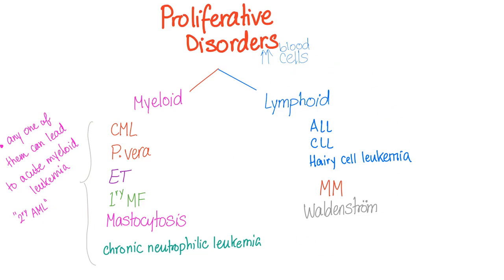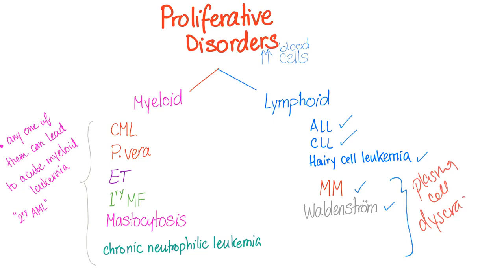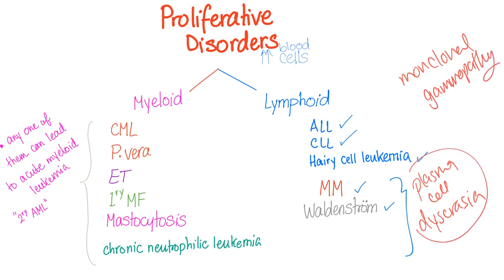The lymphoproliferative disorders include the lymphoid leukemias: acute lymphoblastic leukemia and chronic lymphocytic leukemia, hairy cell leukemia, multiple myeloma, and Waldenstrom macroglobulinemia. Together we can call these plasma cell dyscrasia. We can also call them monoclonal gammopathy. So monoclonal gammopathy is the same thing as plasma cell dyscrasia, which is the same thing as paraproteinemias. Don't ever forget that.